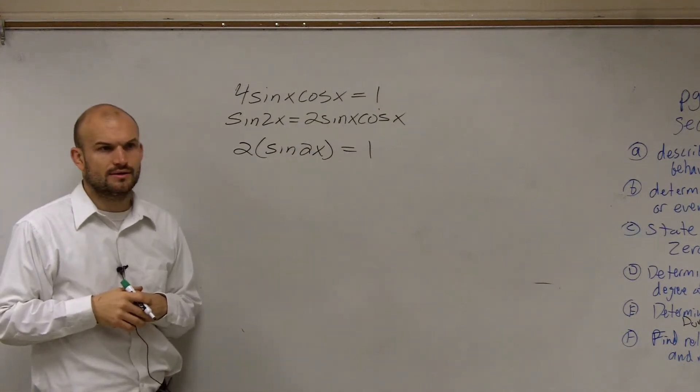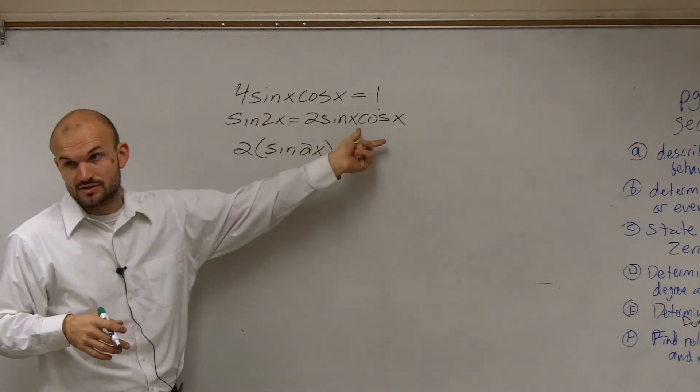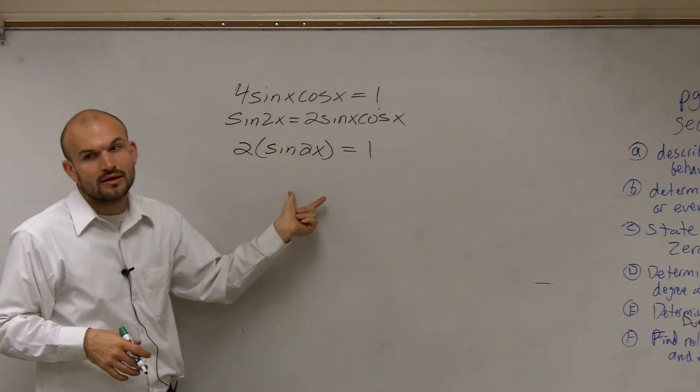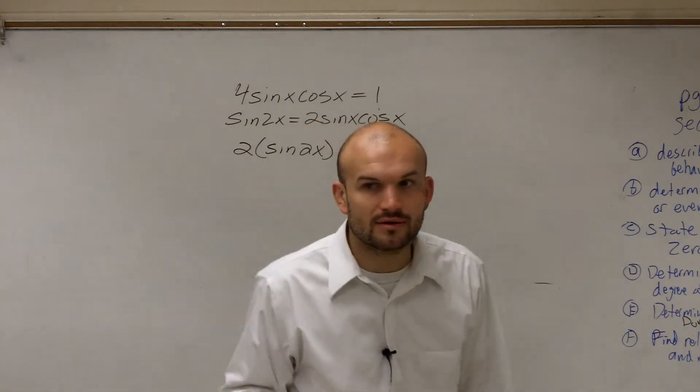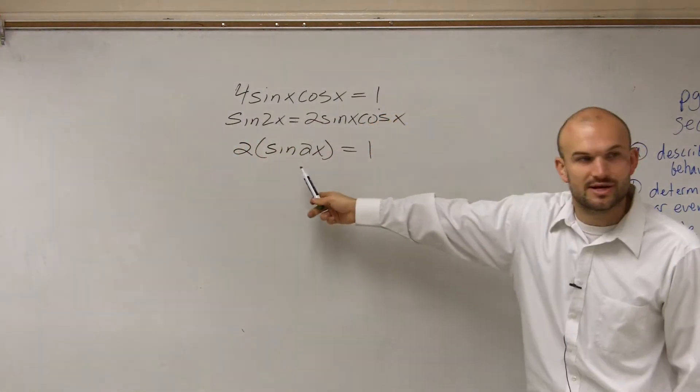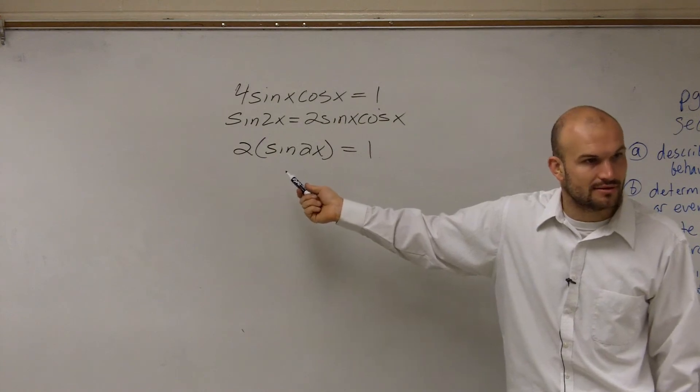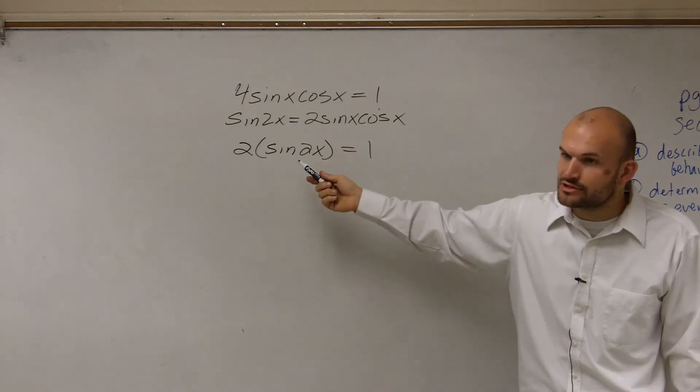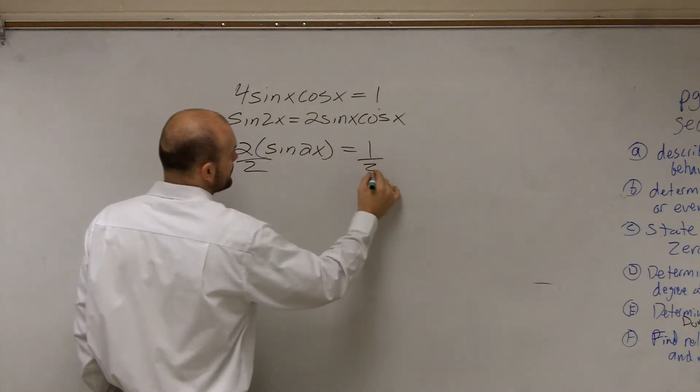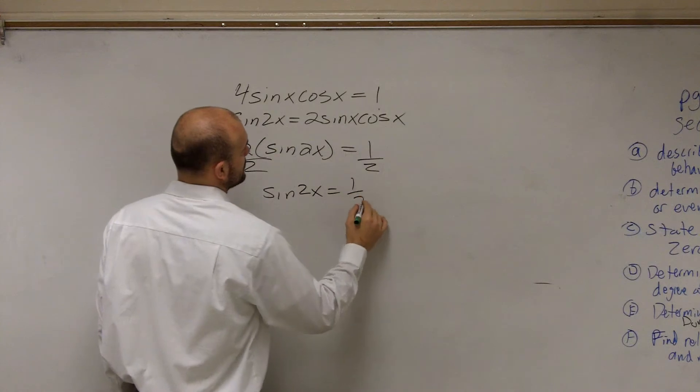Would everybody agree with me on that? Because we know the sine of 2x is equal to 2 sine of x cosine of x. So if I just multiplied that by 2, then I'd have the same formula. Now, why would I even want to do this? Well, if you look at going back from my original equation to now this equation, I now just have one single trigonometric function, right? So now that I have one trigonometric function, I can solve for this. Divide by 2. And I get sine of 2x equals 1 half.